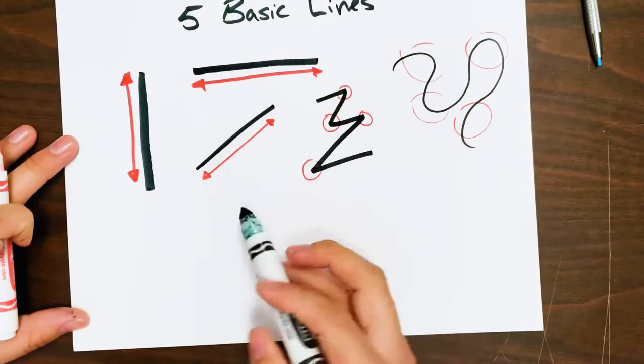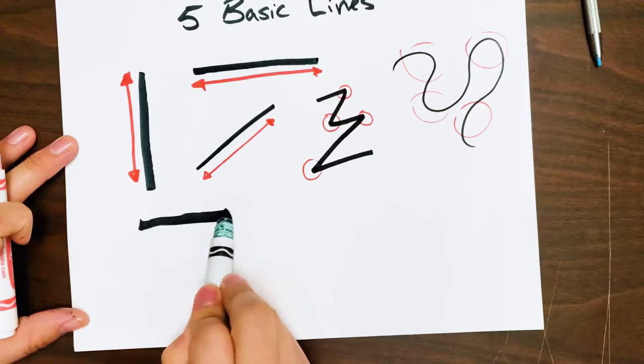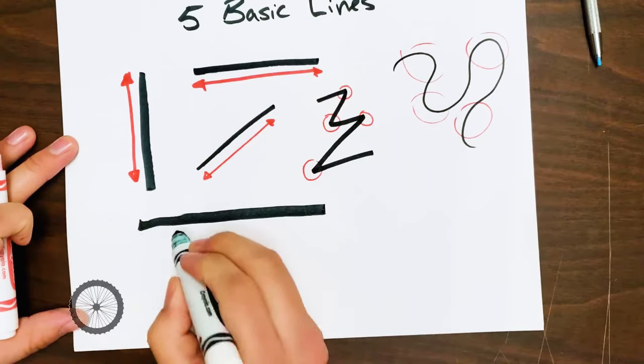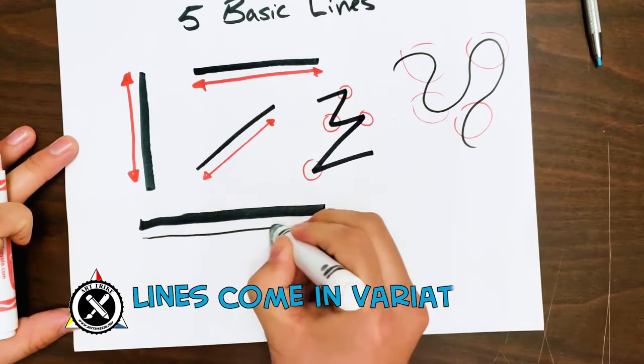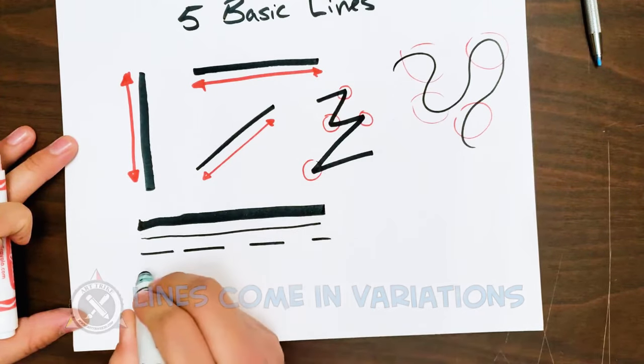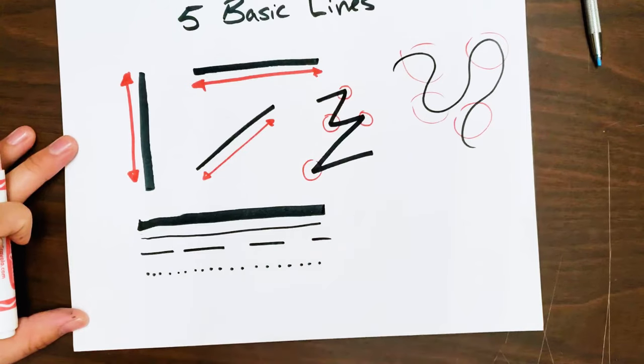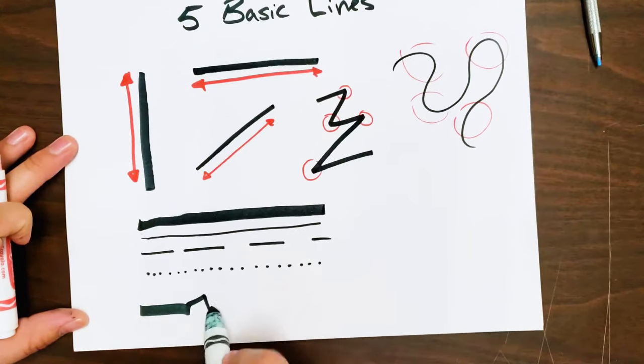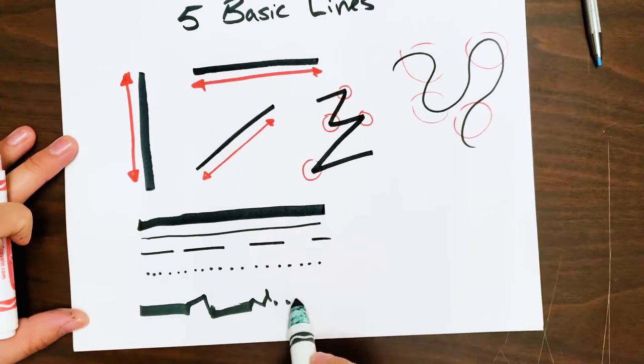Now keep in mind that while these are the five basic lines, they do come in variations. We have thick lines, we have thin lines, we have dashed lines, we have dotted lines, and there's hundreds of different types of lines. And then we have mixes of lines.